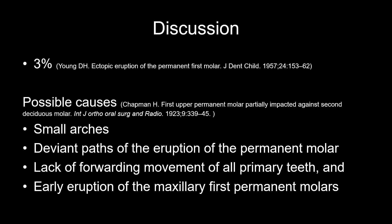Discussion. In one study, Jung found that ectopic eruptions will approximately present 3% of the time. And there are four possible causes, according to the study. These are small arches, deviant paths of the eruption of the permanent molar. The third is lack of forward movement of primary teeth. And the last one is early eruption of the maxillary first permanent molar. You can see more details in the link below my video.